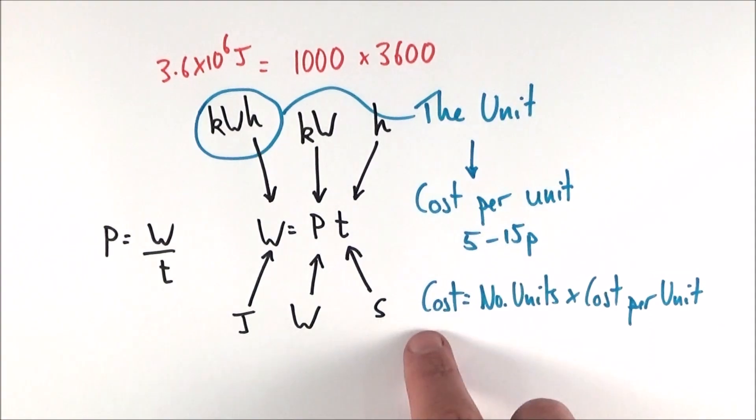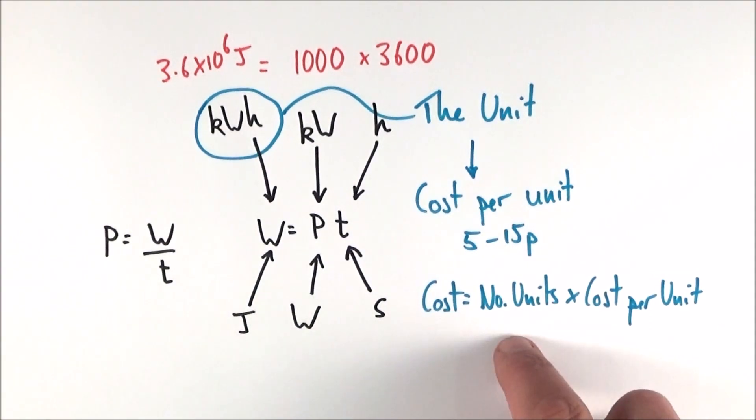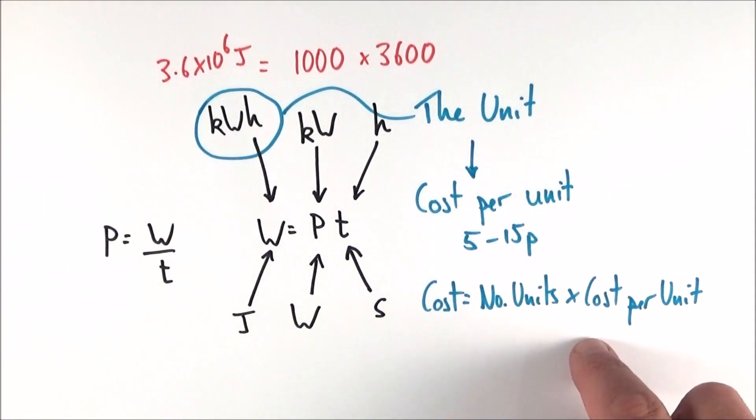The total cost is equal to the number of units multiplied by the cost per unit.